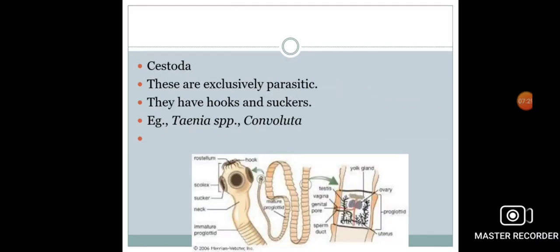Now the third class of Phylum Platyhelminthes is Cestoda. For example, you can see tapeworm, which is also called Taenia solium. All the cestodes are exclusively parasitic in their habitat. It means that they always live as parasites inside the body of their host. They have organs of attachment which are hooks and suckers.